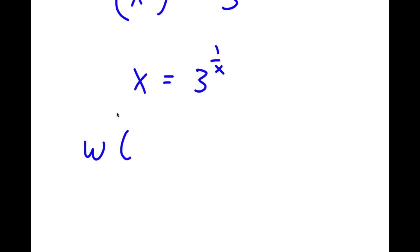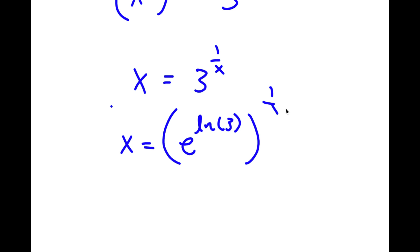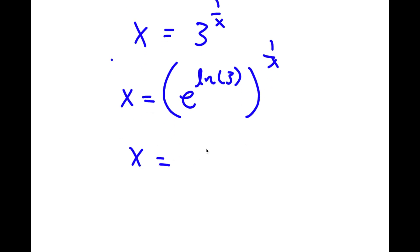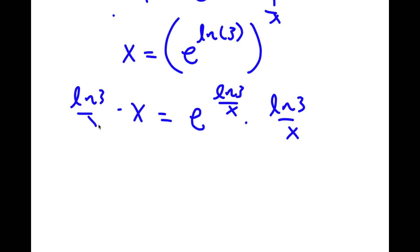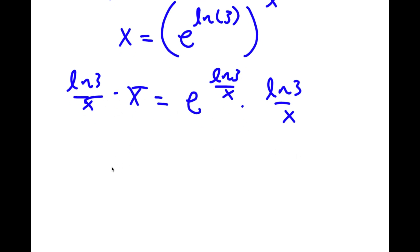Before doing that, I'm going to rewrite 3 to the power of 1 over x as e to the power of ln(3) to the power of 1 over x. Since e and ln cancel out, e to the power of ln(3) is the same thing as 3. This is the same thing as e to the power of ln(3) over x. Now if I multiply both sides by ln(3) over x, I get ln(3) is equal to e to the power of ln(3) over x, times ln(3) over x.